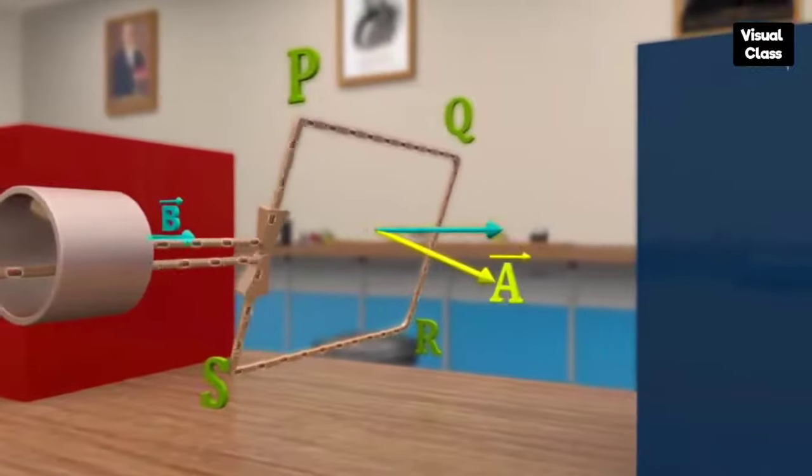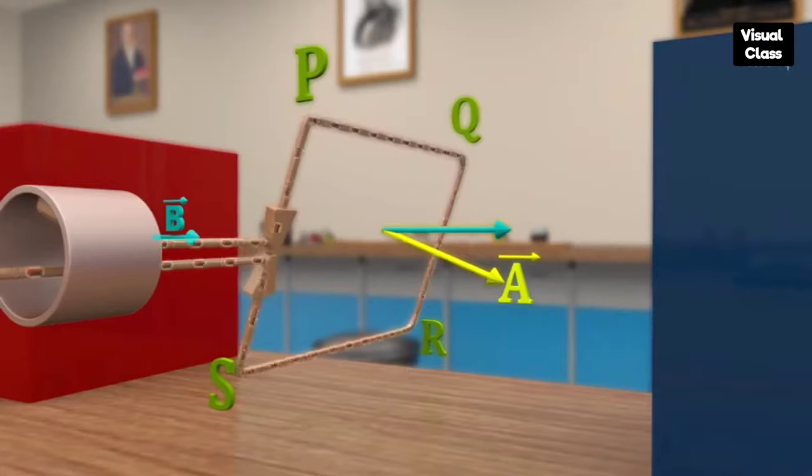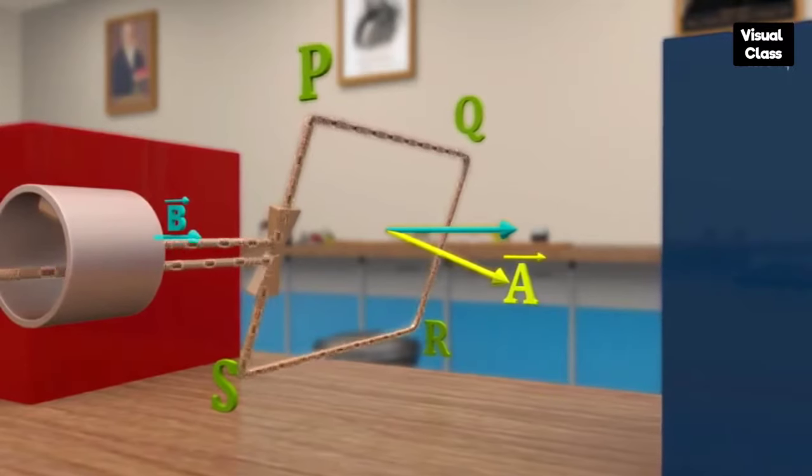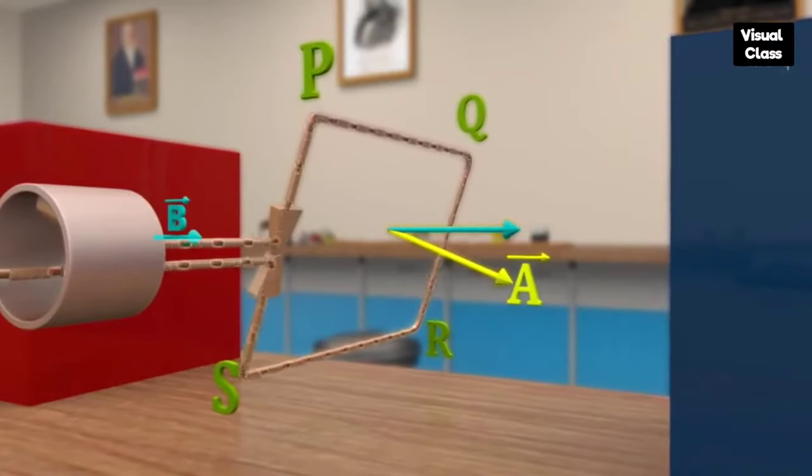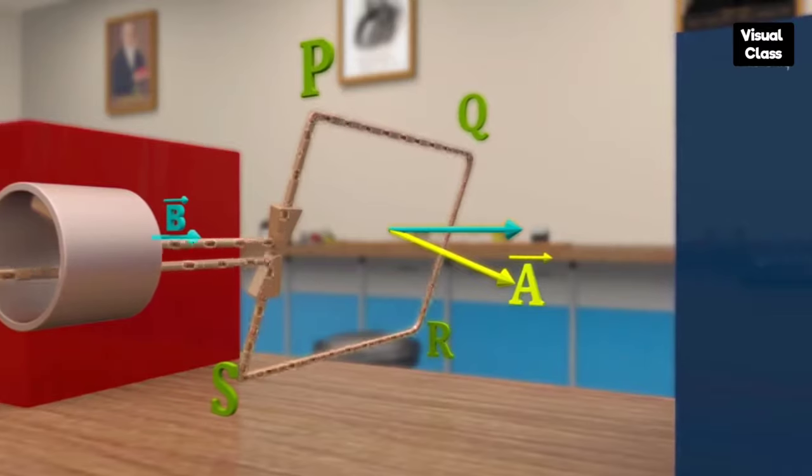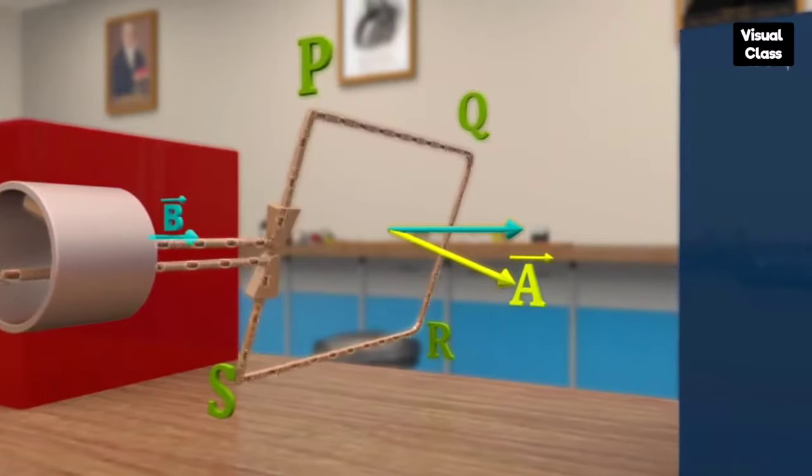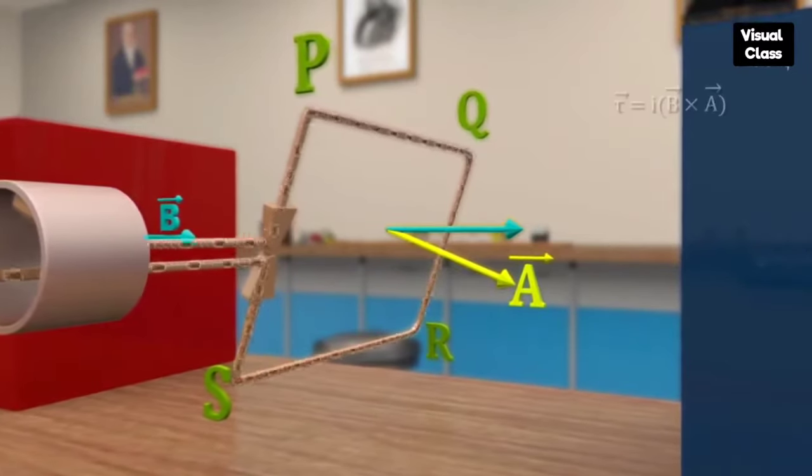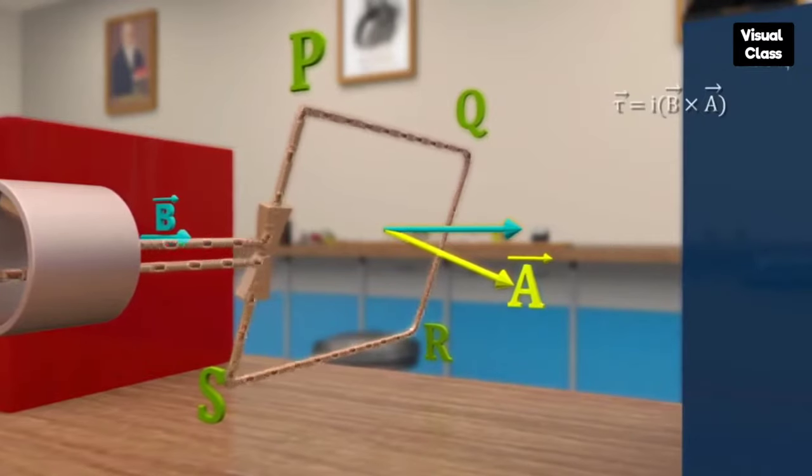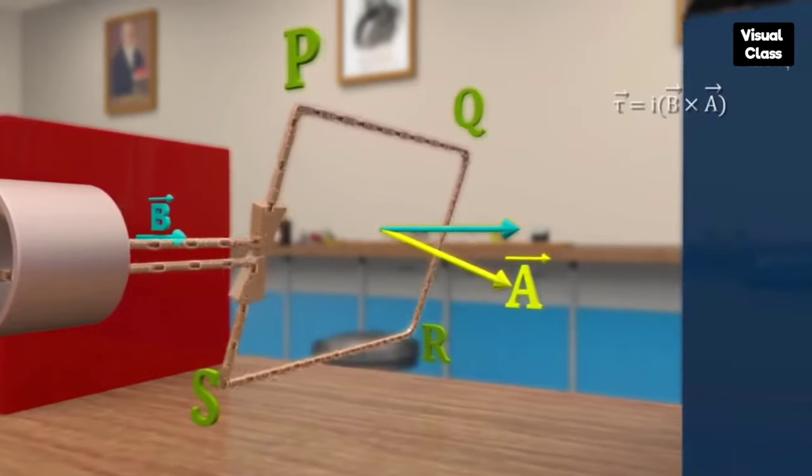Let A bar be an area vector of magnitude A normal to the loop. By curling fingers of right hand in the direction of current, thumb gives the direction of A bar. Net torque can be written as IA bar cross B bar.